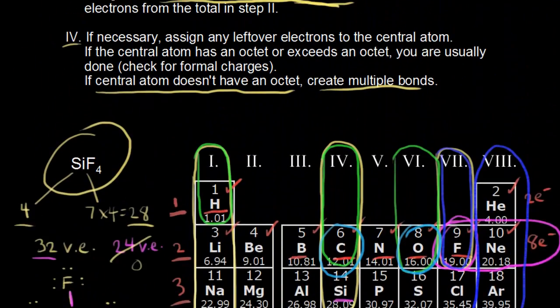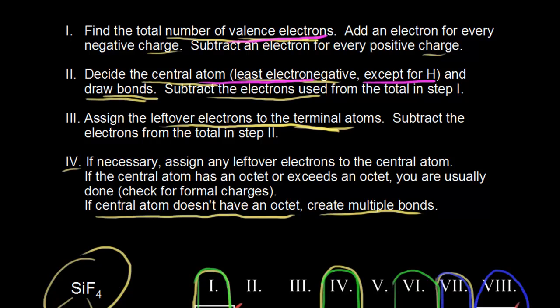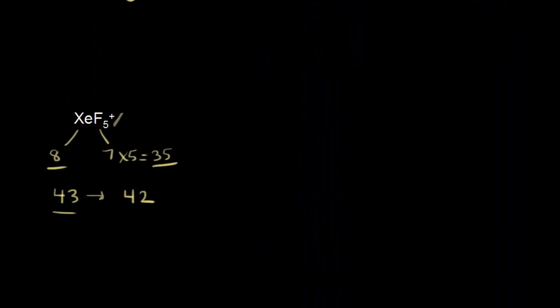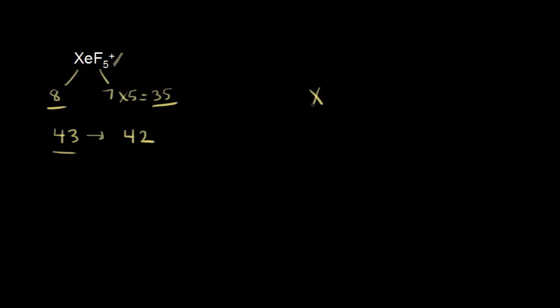Looking at the guidelines: for a positive charge, we subtract an electron. Step two — fluorine is most electronegative, so xenon goes in the center, bonded to five fluorines. Counting those five bonds: that's 10 valence electrons represented. We had 42 minus 10 leaves 32. Notice xenon is already exceeding the octet rule with 10 electrons, but that's fine — xenon is well past the third period and can expand its outer shell.